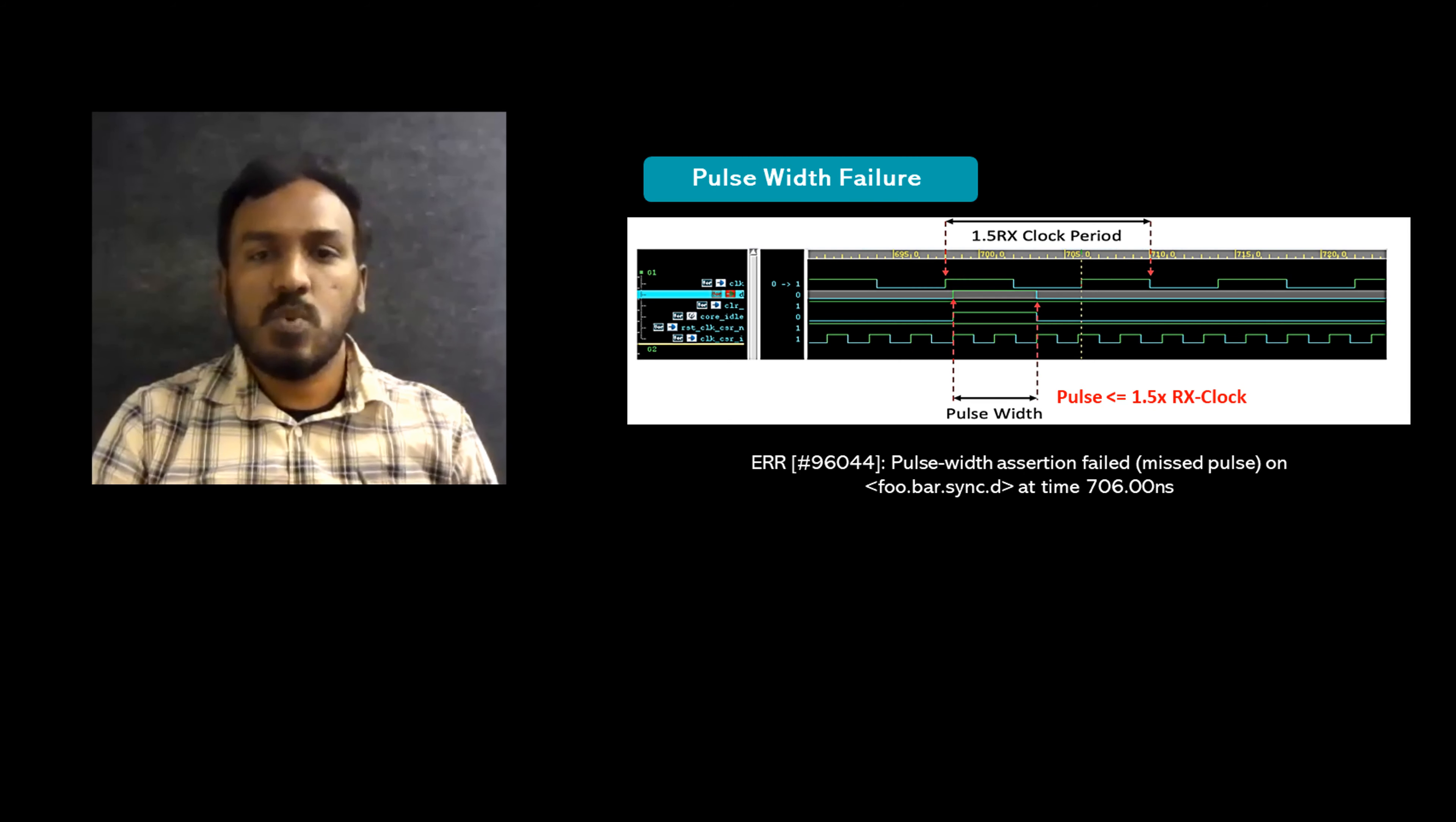Below is one of the errors we caught with this methodology during our pilot. This waveform shows a scenario where our protocol dictated that the width of the pulse should be held stable for at least 1.5 times the clock period of the receive clock. However, the width of the signal coming into the deep end of the flop was less than one clock cycle. So the pulse at the output of the flop would not have been registered.